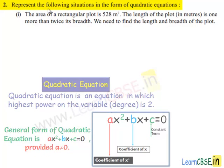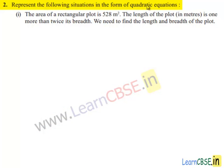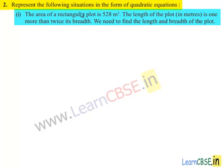Coming to the second problem: represent the following situations in the form of quadratic equations. The first bit given is: the area of a rectangular plot is 528 square meters. The length of the plot in meters is one more than twice its breadth. We need to find the length and breadth of the plot.